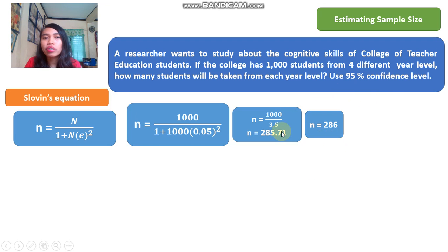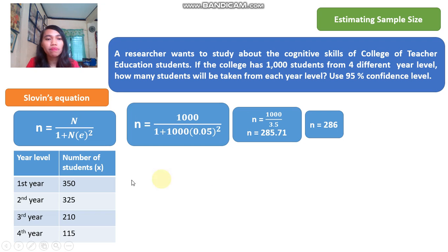Now, the question is from four different year levels. So as a sample, we need to have 286 students from 1,000. And from each year level, considering that this is the number of students in each year level,